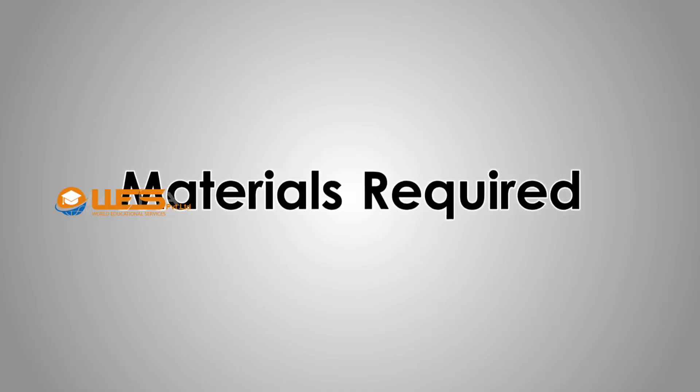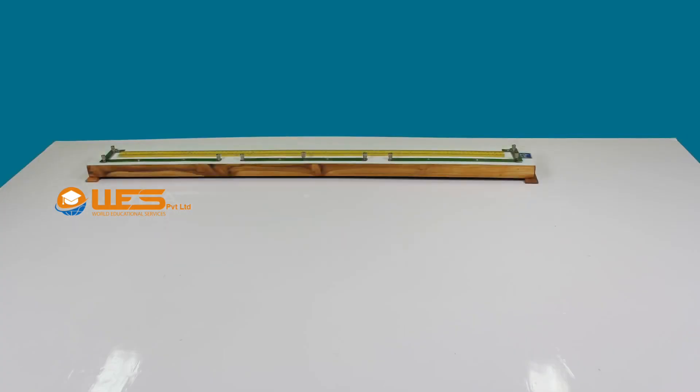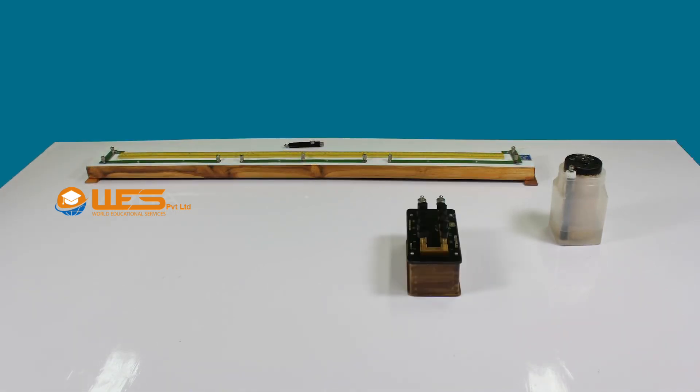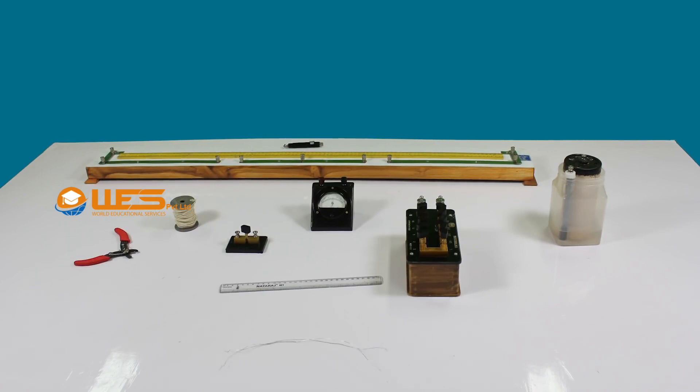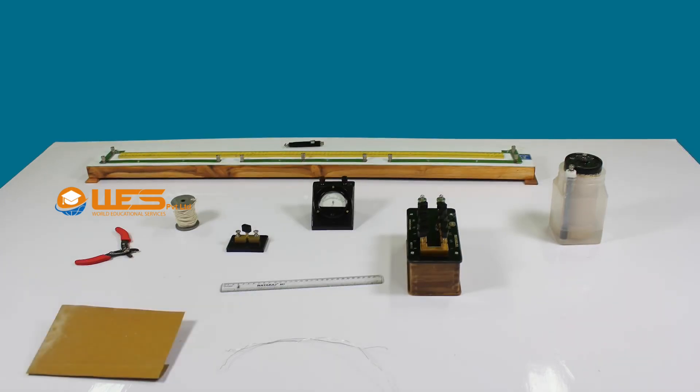Materials Required: A meter bridge, jockey, leclanch cell, resistance box, galvanometer, a key, connecting wires, a wire cutter, scale, two resistance wires or two resistance coils, and sandpaper.